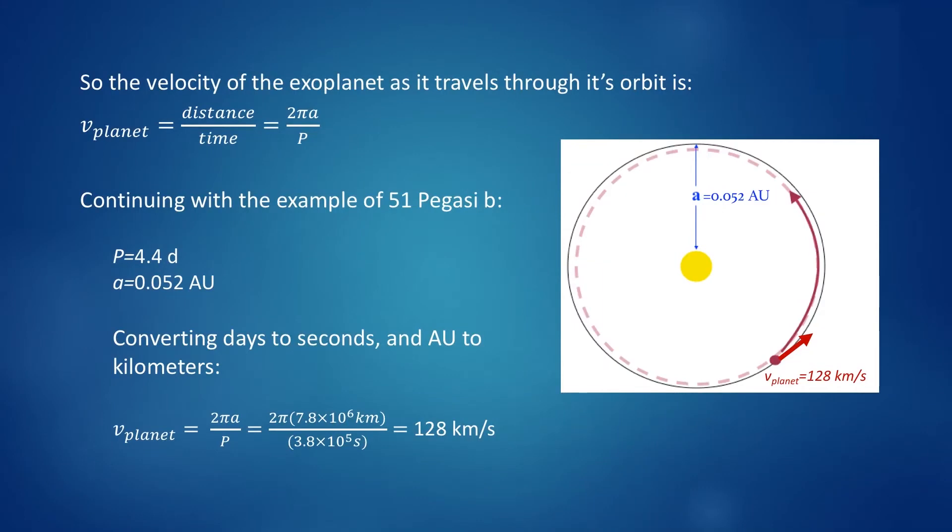Just taking the distance of the orbit and the orbital period, and converting days to seconds and astronomical units to kilometers, we come up with a velocity in the orbit of 128 kilometers per second. And so for this, the first planet discovered beyond the solar system, we have an orbital period of 4.4 days and a velocity in its orbit of 130 kilometers per second. What fraction of that 130 kilometers per second we see depends on where it is in its orbit.